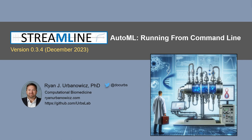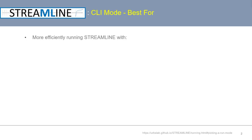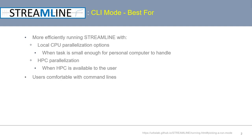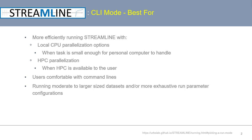Welcome. This video will walk through running the Streamline AutoML tool using a command line interface, both locally and with HPC parallelization. These run modes are best for those interested in running Streamline more efficiently using either local CPU parallelization when the analysis task is small enough for the user's personal computer to handle, as well as using HPC parallelization when an HPC is available, and for users comfortable with command lines running moderate to larger size datasets and more exhaustive run parameter configurations.